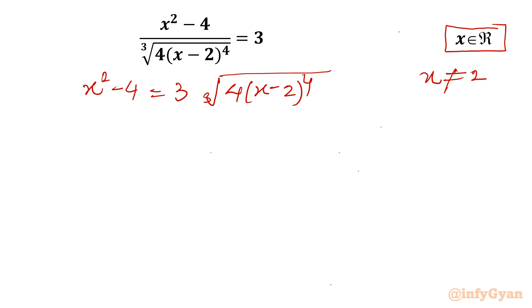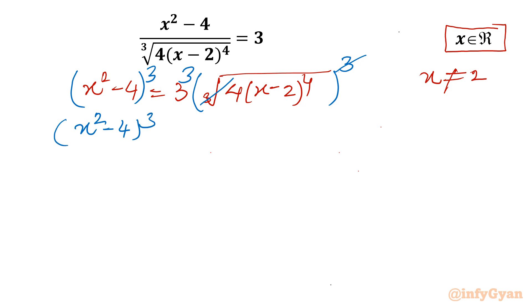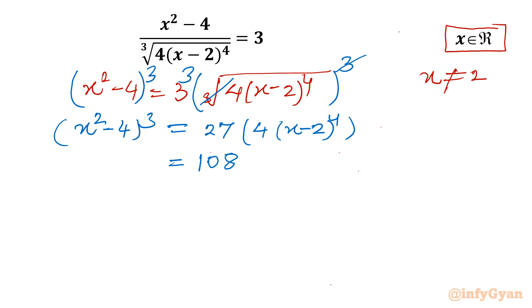Now I will consider cubing both sides. The cube root and cube will cancel, so the LHS becomes (x² - 4)³. On the RHS, 3 cubed is 27, times 4(x - 2)⁴, and multiplying 27 times 4 gives 108(x - 2)⁴.